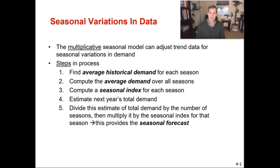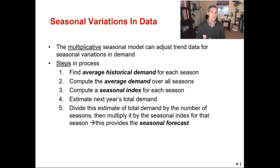There are some steps to creating a seasonal index. Step one: find the average historical demand for each season. Step two: compute the average demand over all the seasons. Step three: compute a seasonal index for each season. Step four: estimate next year's total demand — sometimes it's given, other times you might be told there's a 10 or 15 percent increase from last year. Step five: divide the estimate of total demand by the number of seasons, then multiply by the seasonal index for that season to get the seasonal forecast.